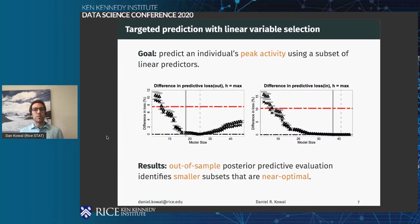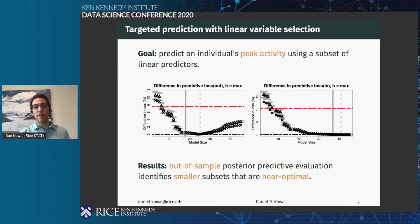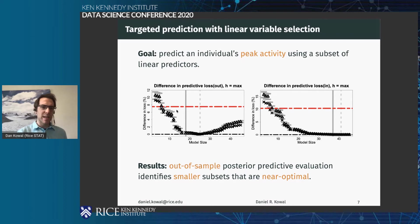We tried to predict an individual's peak activity and all types of different functionals using a subset of linear predictors — things like demographics and basic health information — to extract what are the driving predictors of this functional of your activity, something that's actually interpretable. Using the underlying Bayesian model and the underlying predictive distribution, we're looking at how many predictors you include versus how poor you're doing. We're able to get down to about 10 or 15 variables where you can predict as well as if you had way more variables in the model.